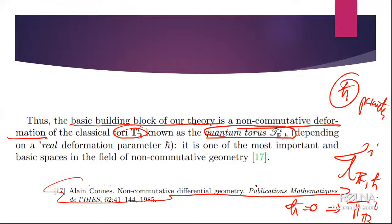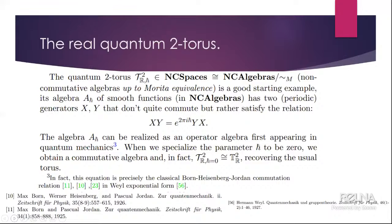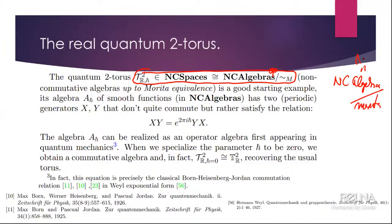The quantum torus appeared in 1985 in the paper by Alan Connes, 'Non-commutative Differential Geometry.' The quantum torus is a non-commutative space. A non-commutative space is essentially a non-commutative algebra modulo Morita equivalence. If you have a classical space, its regular functions form a commutative algebra; for a non-commutative space, the regular functions form a non-commutative algebra.